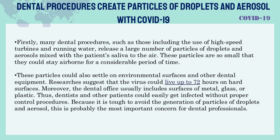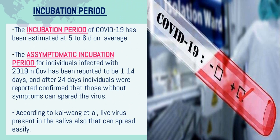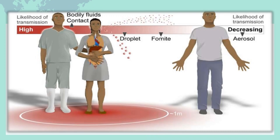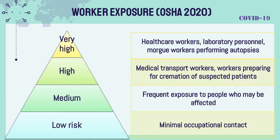The incubation period of COVID-19 has been estimated at 5 to 6 days on average. The asymptomatic incubation period for individuals infected with 2019-nCoV has been reported to be 1 to 14 days, and after 24 days individuals were reported confirmed that those without symptoms can spread the virus. According to Kai Wang et al., live virus present in the saliva can spread easily.